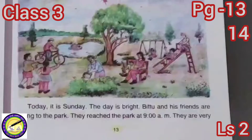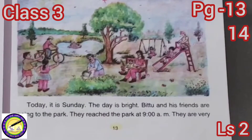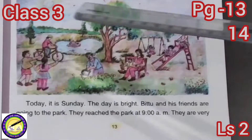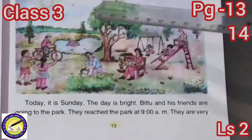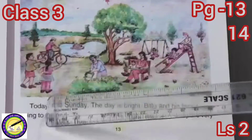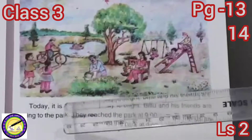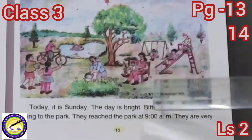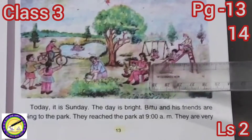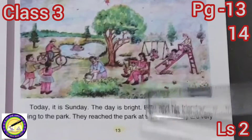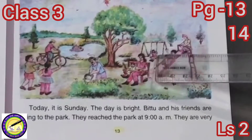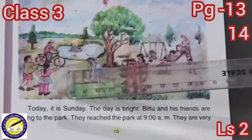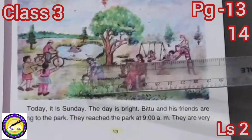Let us start the reading. Children, this is the picture of a park. We can see a sun, a kite, a big tree, some other trees, some children that are playing, a gardener who is watering the plants, some slides, flowers, a girl on a swing, a fountain, a pond, and some ducks.